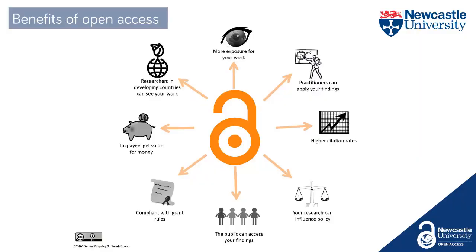But there are other benefits to open access for both authors, institutions, and society in general. If work is available to everyone it's likely to receive more exposure — more people can see it without hitting a barrier. That can include practitioners at other institutions who don't have access through their subscriptions, which means citation rates may be higher. It may also lead to influence on government policy and the general fairness of the public being able to access work that they paid for.